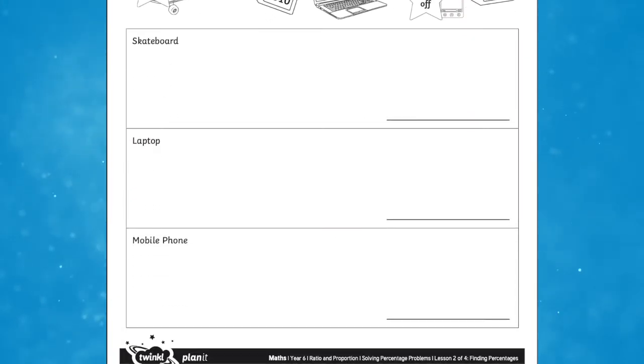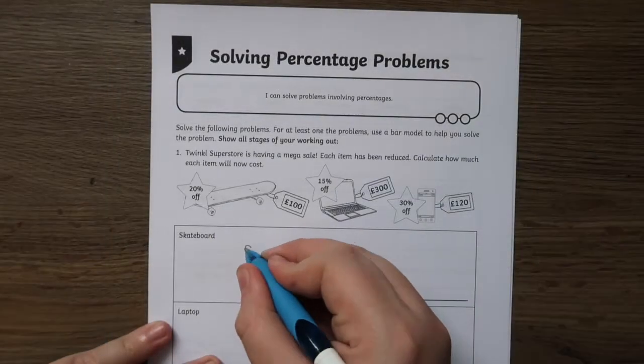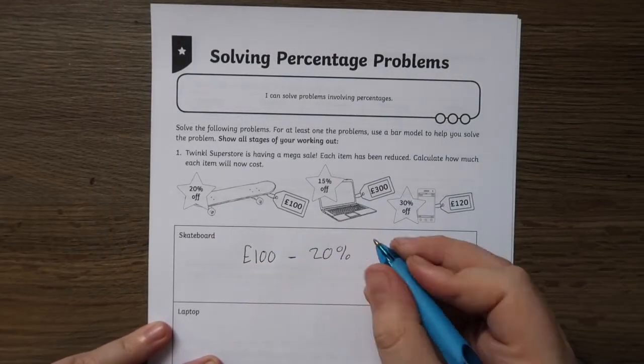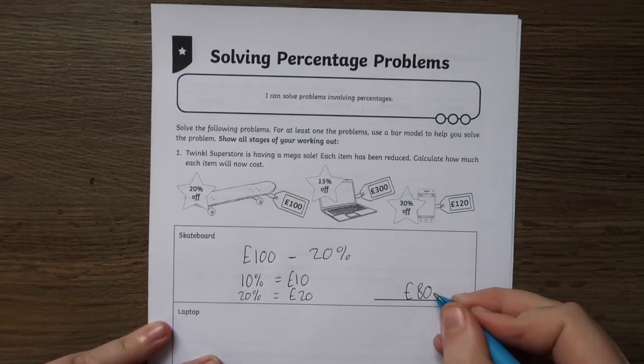By solving these percentage word problems, Year 6 children will complete real life examples of using percentages, such as calculating the cost of sale items and the percentage increase on children cycling and running pursuits.